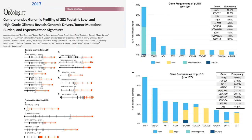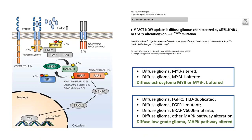In 2017, data on comprehensive genomic profiling in pediatric low-grade and high-grade gliomas were published. In contrast to adult gliomas, which have similar mutational profiles in low-grade and high-grade gliomas, pediatric gliomas are characterized by MAPK pathway mutations in low-grade gliomas and histone and P53 mutations in high-grade gliomas. As a result, C-Impact Now update 4 recommended recognizing diffuse astrocytoma MYB or MYB-L1 altered and diffuse low-grade glioma MAPK pathway altered gliomas as separate entities.